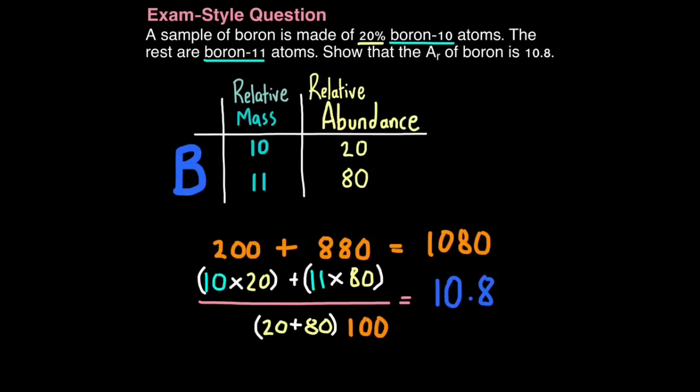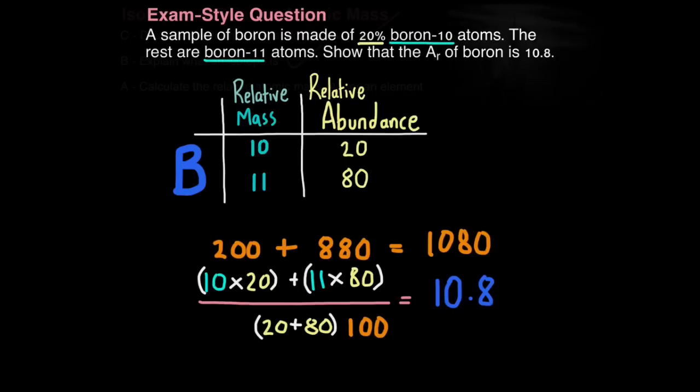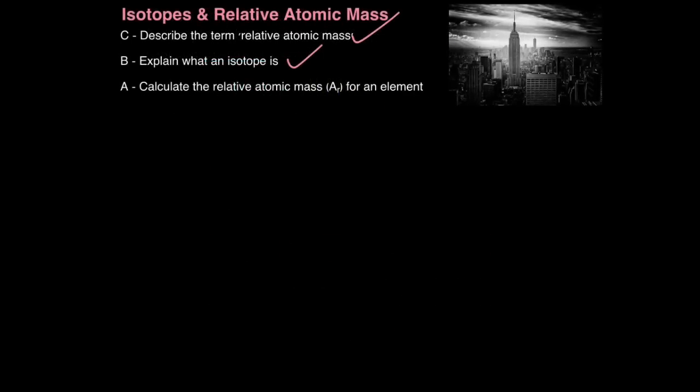This shows that the relative atomic mass of boron is 10.8. If I were you, I'd look at past papers right now and try and give as many of these a go as possible. They often carry quite a few marks, even up to six marks, which can raise your grade by one. And that's how we calculate the relative atomic mass for an element.